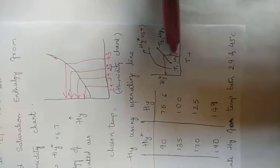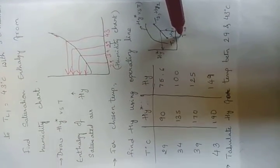Next, the actual enthalpy HY is found for each temperature from the operating line graph. For 29°C, HY = 75.6, and for 43°C, HY = 149. For intermediate temperatures 34°C and 39°C, move upward from the temperature on the x-axis to the operating line, then read across to get HY values of 100 and 125, respectively. HY* comes from the humidity chart; HY comes from this graph.